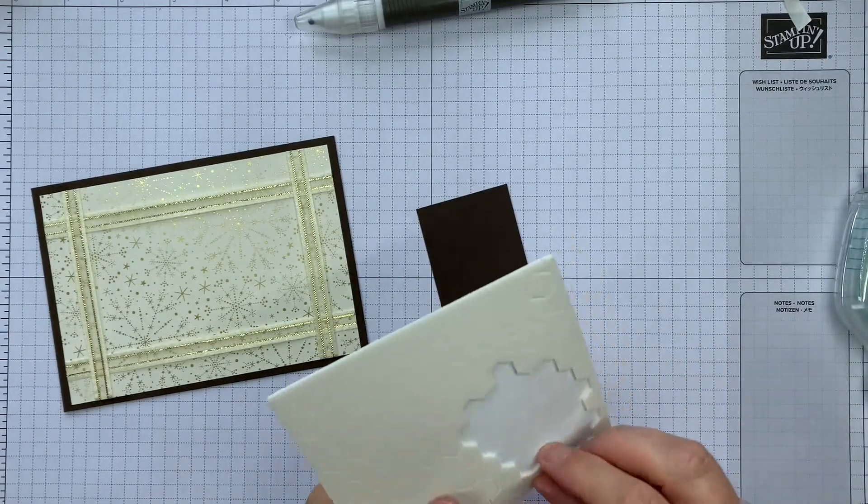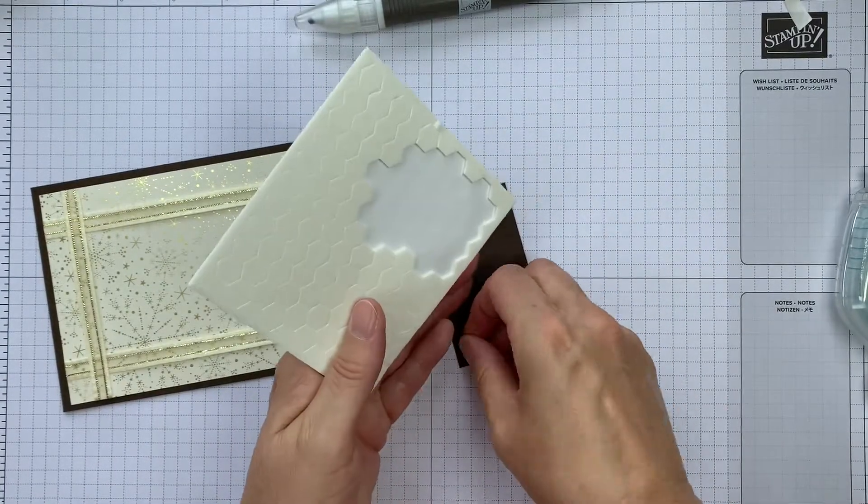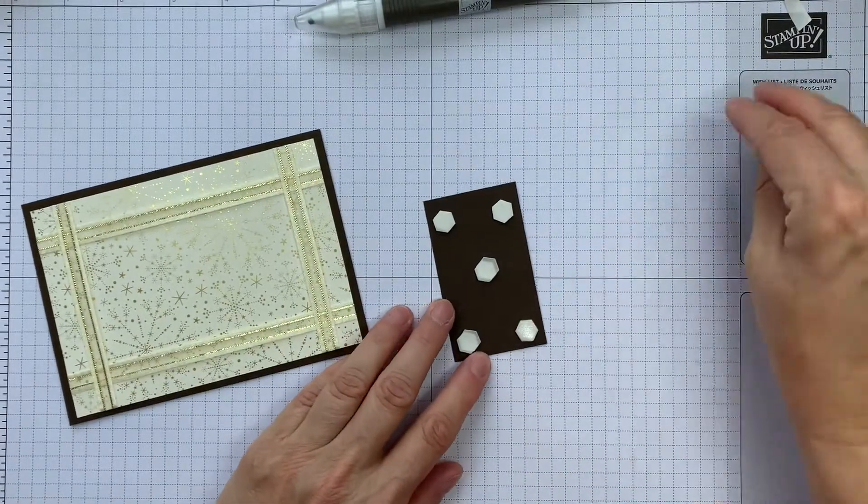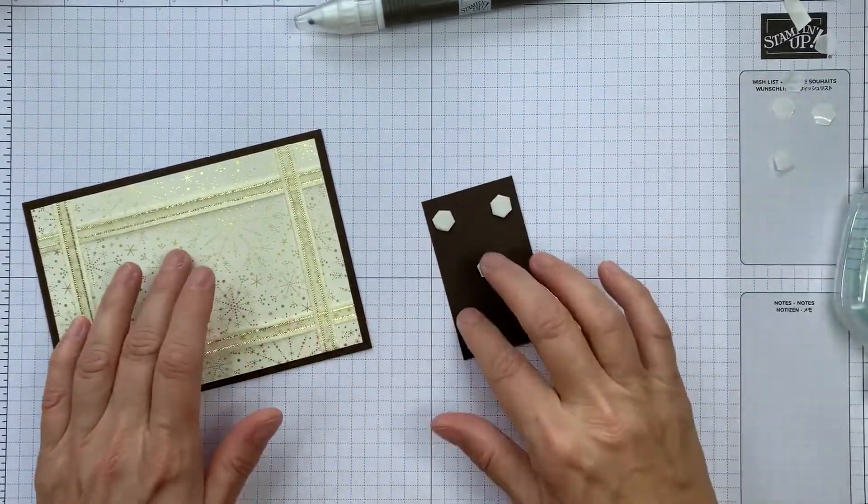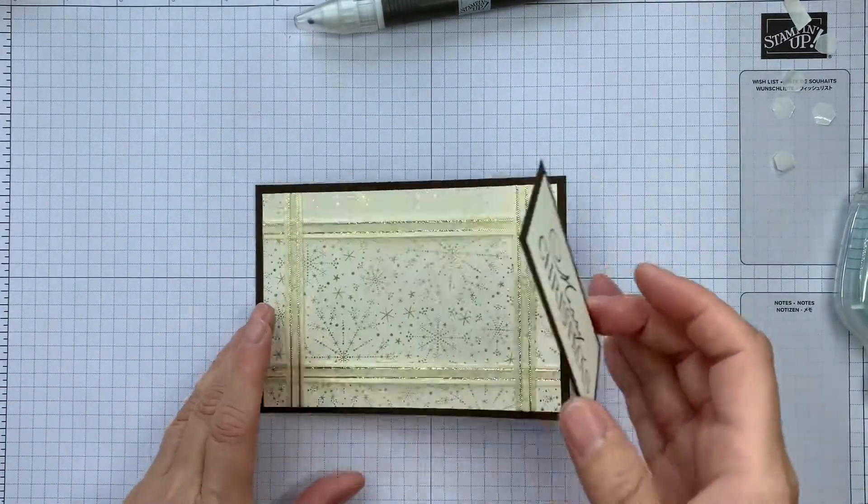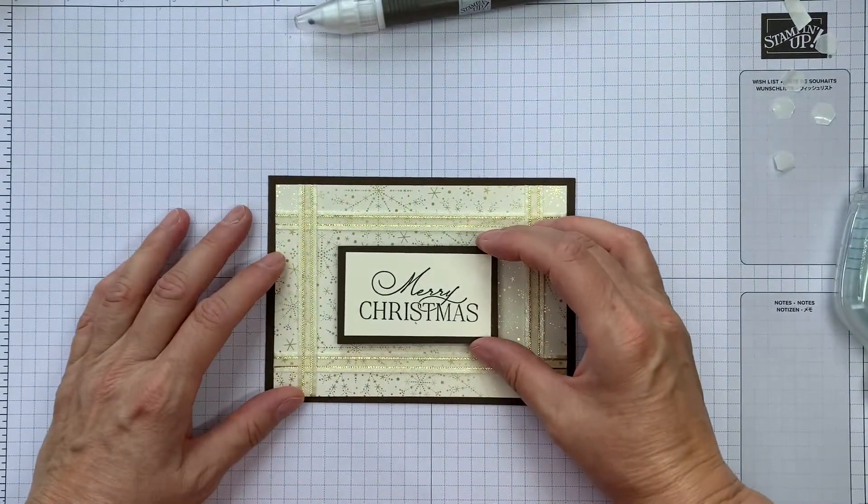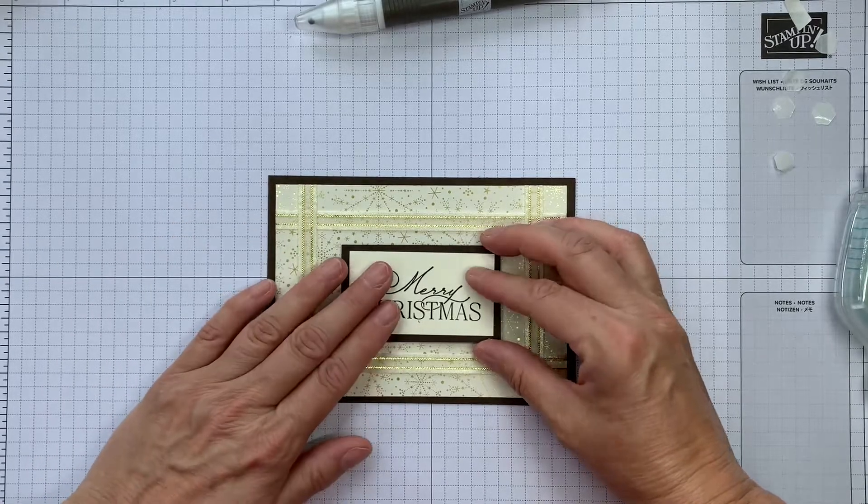So some dimensionals now. Pop them in the corners and in the center. So double check my cards opening the right way.